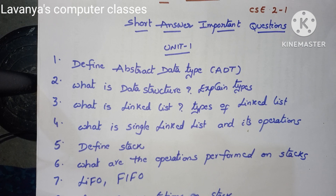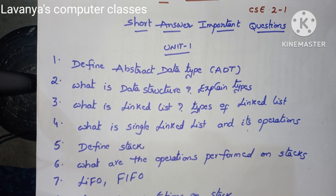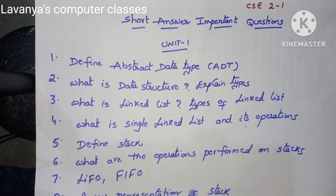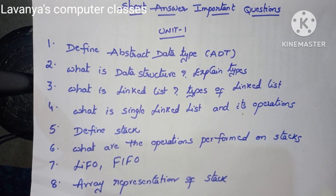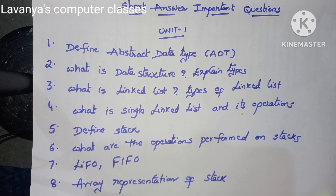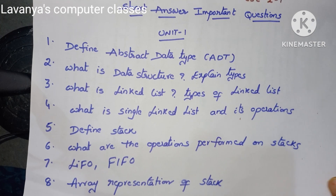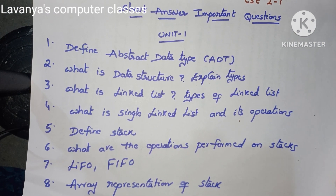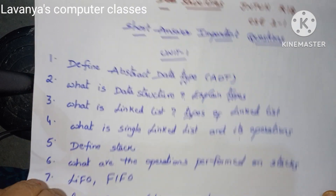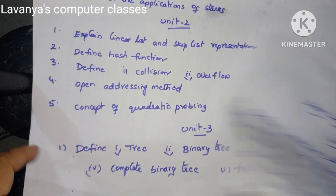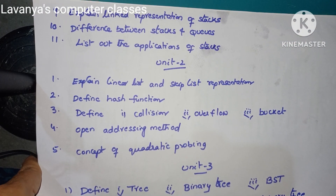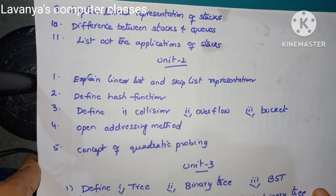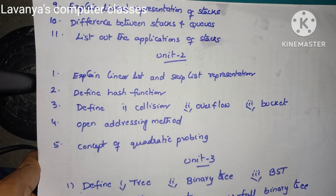Also: what is a singly linked list and explain its operations; what is a doubly linked list and explain its operations; define stack and what are the operations performed on stacks; explain LIFO and FIFO or the difference between LIFO and FIFO; explain how to represent stacks using arrays; explain linked representation of stacks; difference between stacks and queues; and list out the applications of stack.